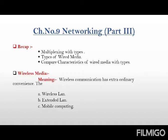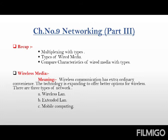Just to recap what we finished in the previous session: we finished multiplexing with its types. Multiplexing means multiple access — dividing frequency (frequency multiplexing), dividing time (time multiplexing), and dividing code (code multiplexing). We also finished the types of wired media: twisted pair cable, coaxial cable, and fiber optic cable, and we compared each cable using their characteristics.